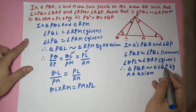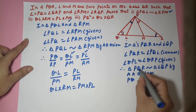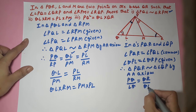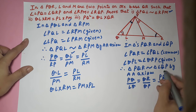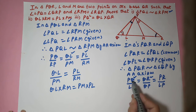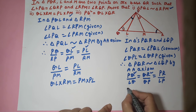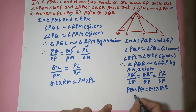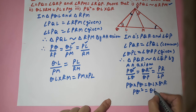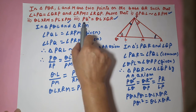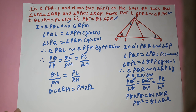Therefore, their corresponding sides are proportional: PQ/LQ = QR/QP = PR/LP. I want PQ², so I take the first two ratios. Cross multiplying: PQ × PQ = QL × QR, so PQ² = QL × QR. That's what we had to prove. You have to choose the right two triangles, prove them similar, and then set the proportionality between their sides.